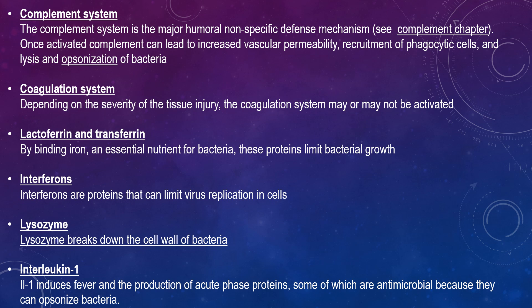Once the complement system is activated, it can lead to increased vascular permeability, recruitment of phagocytic cells, and lysis and opsonisation of bacteria. Regarding the coagulation system, depending on the severity of tissue injury, the coagulation system can or cannot be activated. Some products of the coagulation system contribute to non-specific defences with the ability to induce vascular permeability and act as chemotactic agents for phagocytic cells. Some products are directly antimicrobial — for example, beta lysine, a protein produced by platelets during coagulation, can lyse many gram-positive bacteria by acting as a cationic detergent.